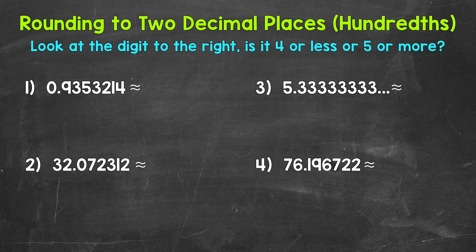and then take a look at the digit to the right. That digit to the right tells us if we keep the digit the same or if we round up. Four or less keep the digit the same. Five or more round up. I'm going to start by underlining the digit in the hundredths place, which is two spots to the right of the decimal. We have a three in the hundredths place.